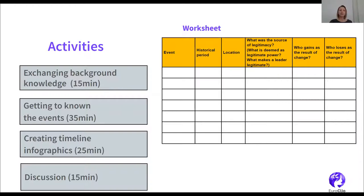However, this activity can be done in different ways. For example, students can draw timeline infographics on a sheet of paper using color markers. If it is the first time students are working with infographics, it would be useful to show them some examples. Throughout this exercise, teachers should facilitate group work by asking students what they want to present in their infographics — for example, what the different phases of ideas evolution might be and how to name them, or what the most significant events are and how to highlight them.